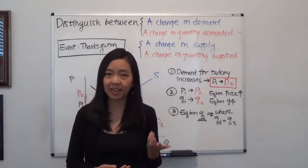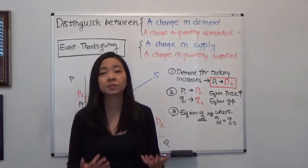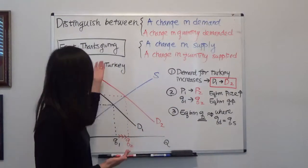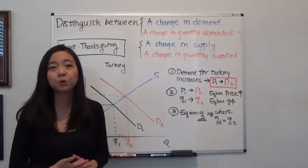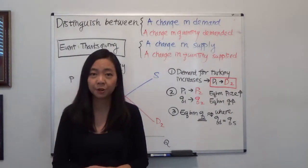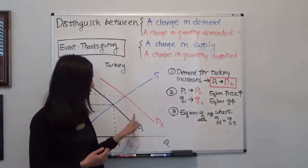First of all, you know the demand side has changed because consumers consume more turkey during the holiday season. So we're going to see a shift of the demand curve from D1 to D2.